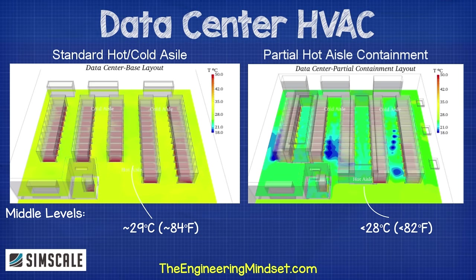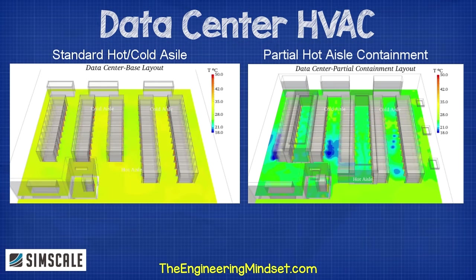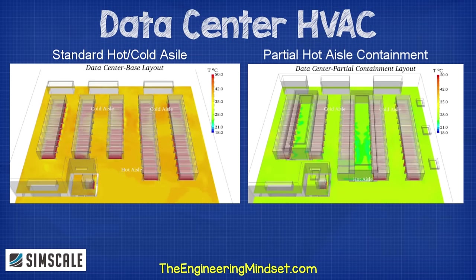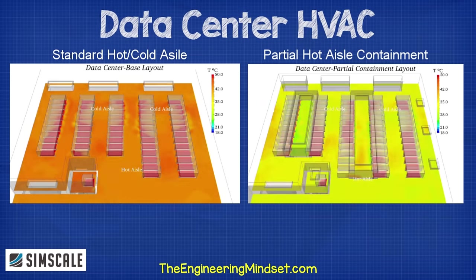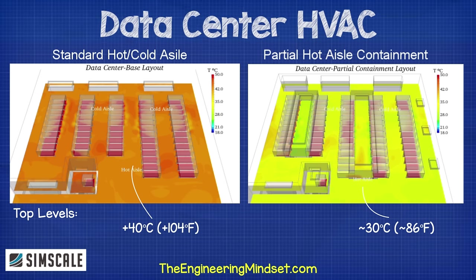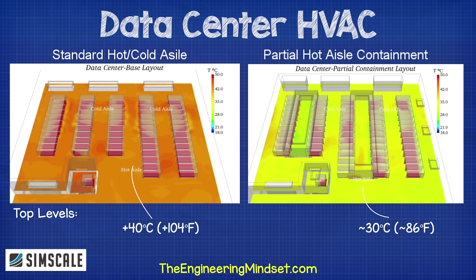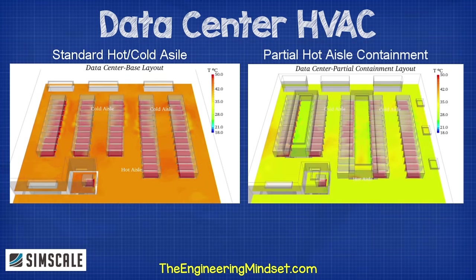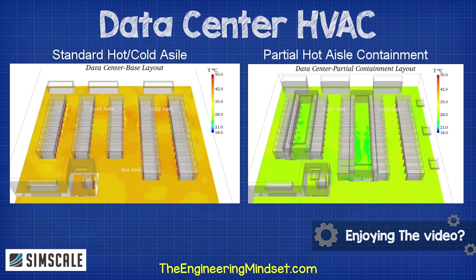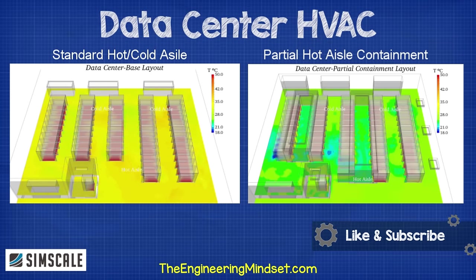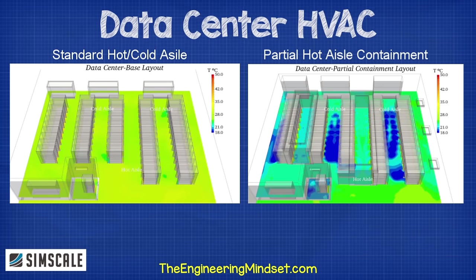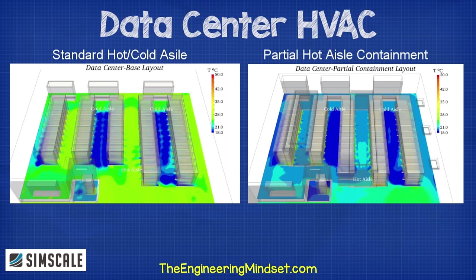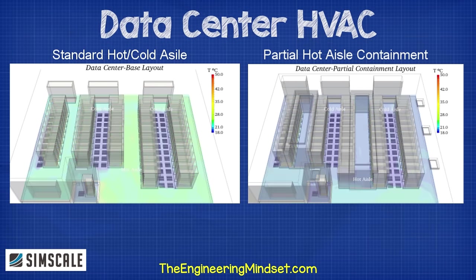Whereas the first design has temperatures above 29 degrees Celsius or 84 degrees Fahrenheit. The recommended ranges from standards require that the inlet air temperature be within 18 to 27 degrees Celsius or 64 to 80 degrees Fahrenheit. At the very top levels, the temperature for the first design is now in the hotter range of 40 plus degrees Celsius or 104 degrees Fahrenheit, while the second design — the partial containment one — has only a maximum of 30 degrees Celsius or 86 degrees Fahrenheit. Thus, the second design performs much better and further design improvements such as full hot aisle or cold aisle containment can be studied using cloud-based CFD to improve data center cooling as well as optimizing energy consumption of both the server equipment and cooling units.